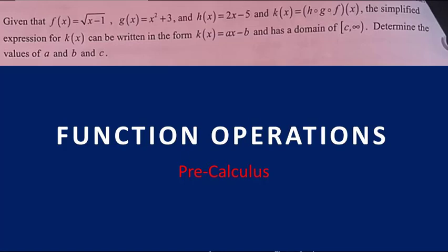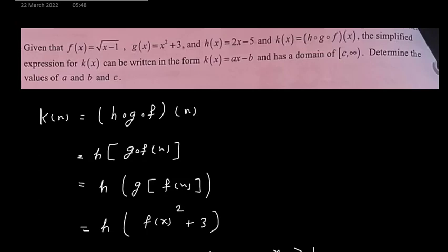Hello everyone. Now in this question we have f(x) is root x minus 1, g(x) is x squared plus 3, h(x) is 2x minus 5, and k(x) is h of g of f of x.